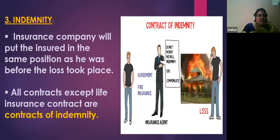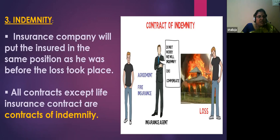The third principle is Indemnity — assurance or guarantee. The insurance company puts the insured in the same position as he was before the loss took place. All contracts except life insurance are contracts of indemnity. Life insurance is not a contract of indemnity because if a person dies, the company cannot bring him back alive; death cannot be calculated in terms of money, nor is money full compensation for the loss of life. For other contracts, people can be compensated with money.